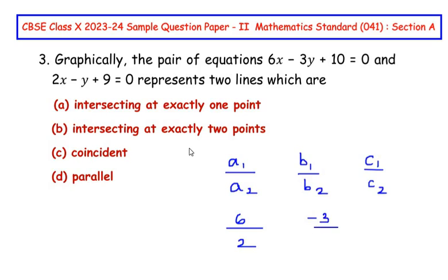And b2 is going to be negative 1, and c1 is going to be 10 and c2 is going to be 9.